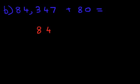We'll use slightly higher numbers for this one. What is 84,347 plus 80? Now the first stage is we're going to rewrite this into the vertical format. We have 84,347 plus 80.